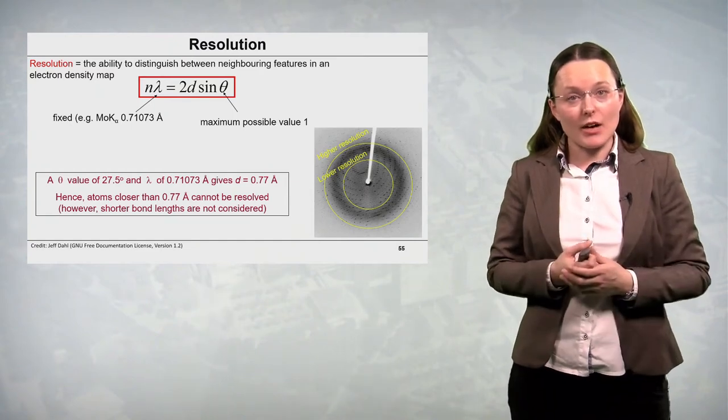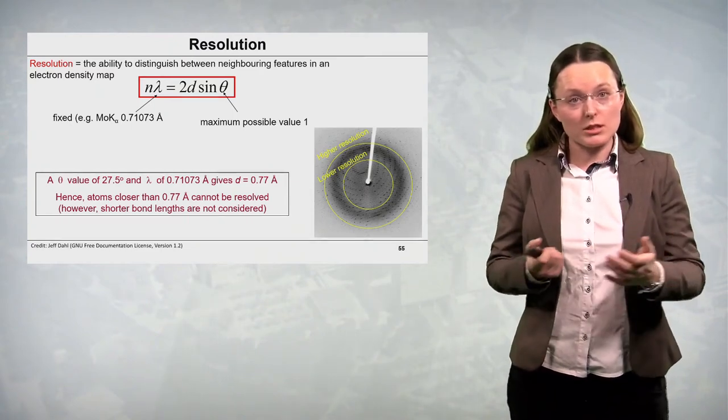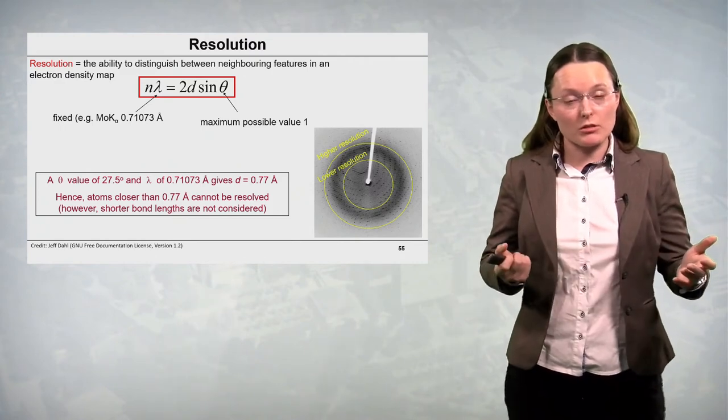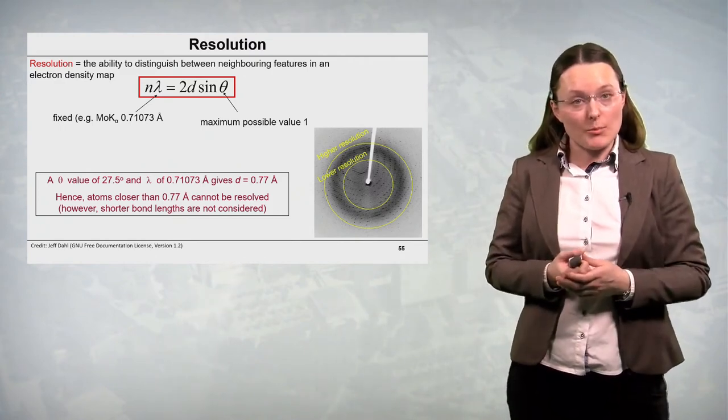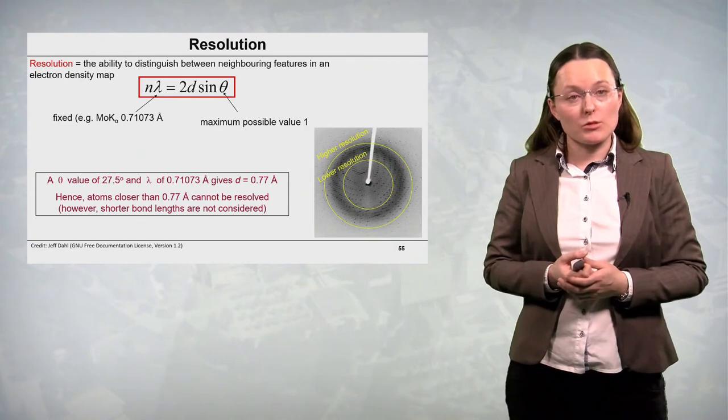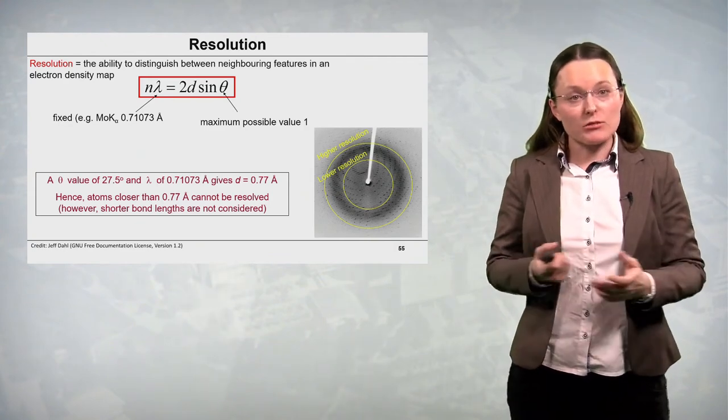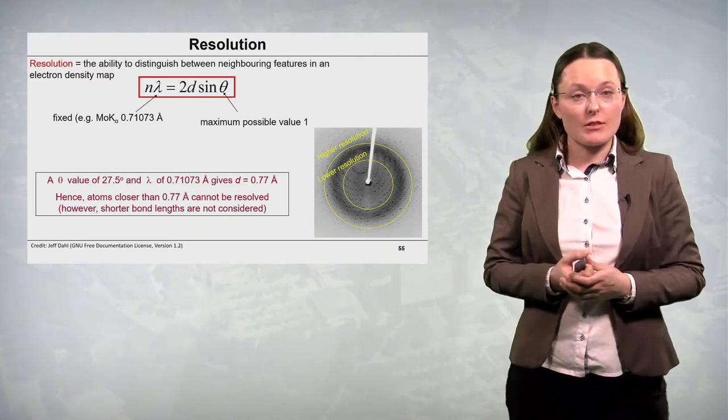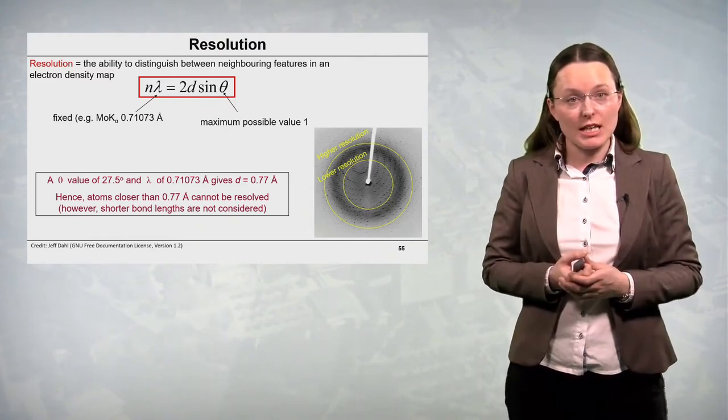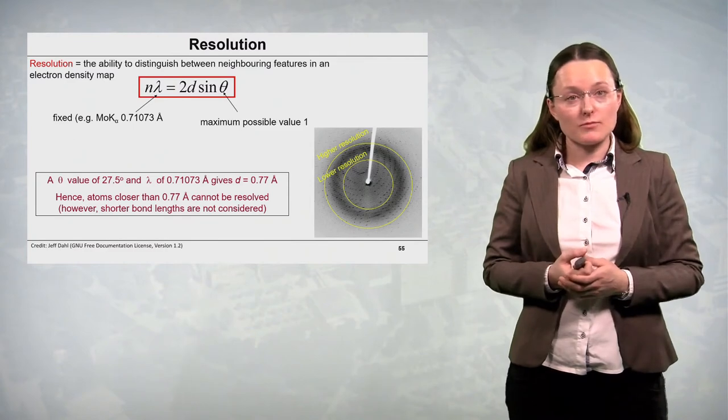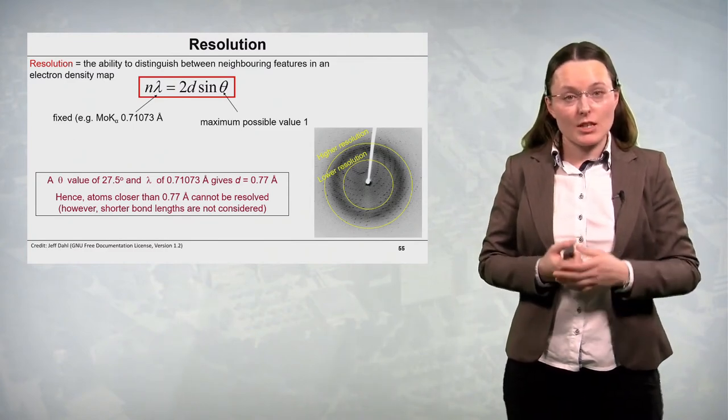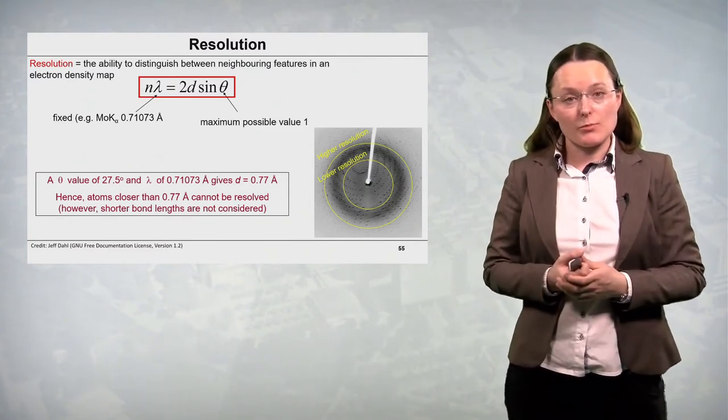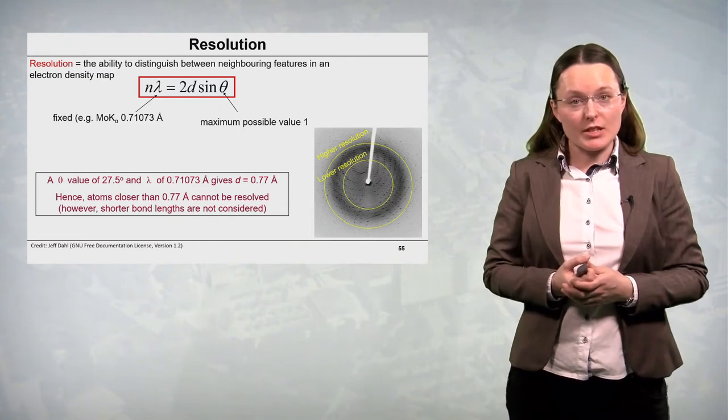Sine theta value can adopt only certain values from trigonometry. So the maximum possible value here would be 1. And we can calculate that for the maximum theta value of 27.5 degrees and molybdenum radiation, the resolution defined as D will be 0.77 angstroms.